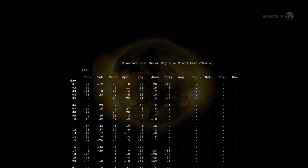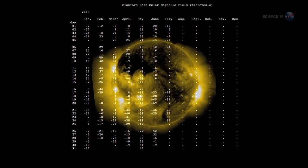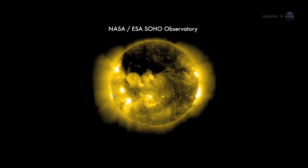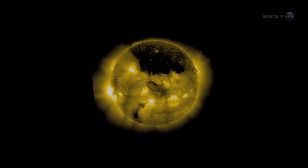As the field reversal approaches, data from Wilcox show that the Sun's two hemispheres are oddly out of sync. The Sun's North Pole has already changed sign, while the South Pole is racing to catch up, says Shearer.